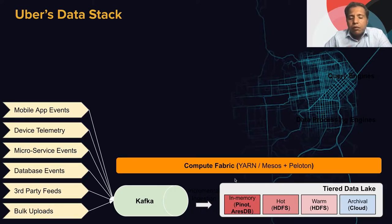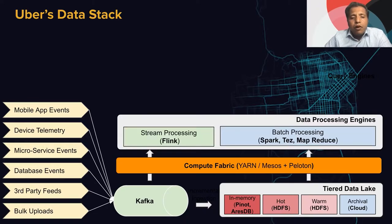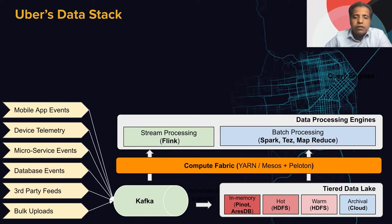We have ComputeFabric on top of it, which runs YARN, Mesos, and Peloton. We also have stream processing with Flink, as well as batch processing such as Spark and MapReduce, which all run on this ComputeFabric.